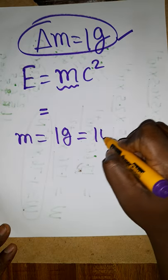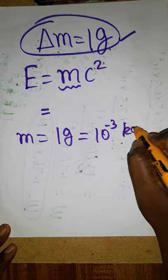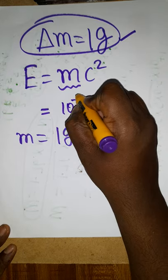How much is this in kilograms? It's 10 power minus 3 kilogram. So mass is 10 to the minus 3 kilograms.